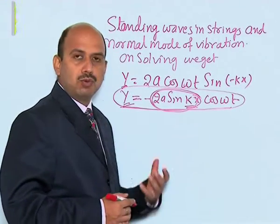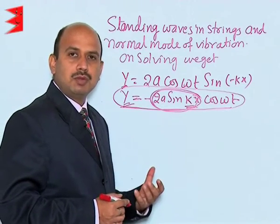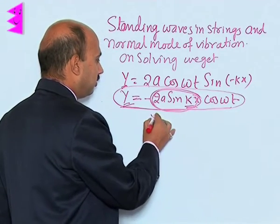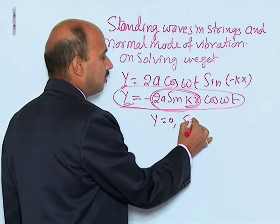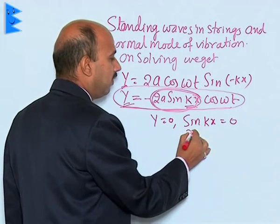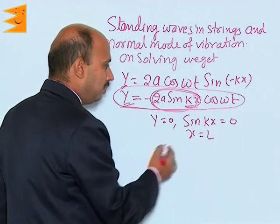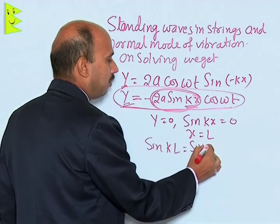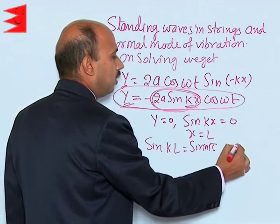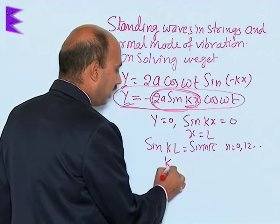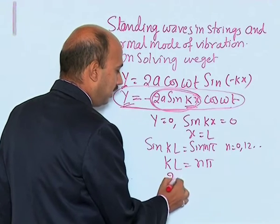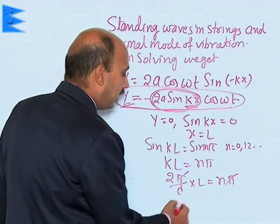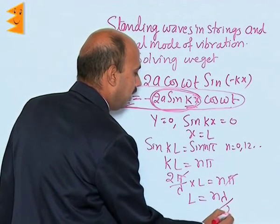In the case of a string, both ends are tied to a rigid support, meaning at both ends the displacement will be equal to 0. We have already shown that y is equal to 0 when sin(kx) is equal to 0. So if we take x equal to l, we get sin(kl) equal to sin(nπ), where n equals 0, 1, 2, 3 and so on. Therefore kl equals nπ, and 2π upon lambda times l equals nπ. Cancelling, l is equal to nλ/2.